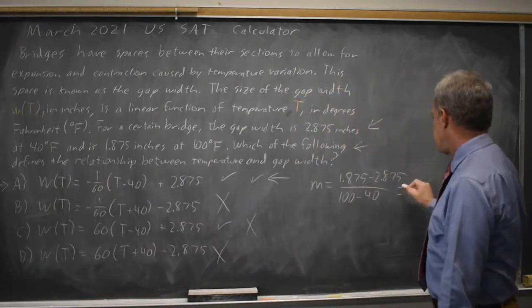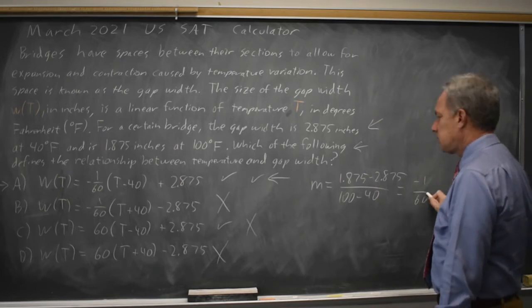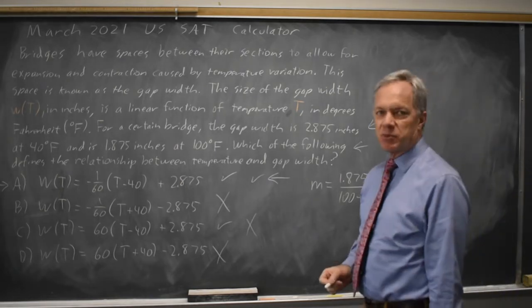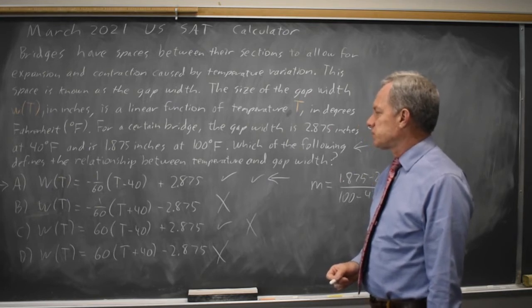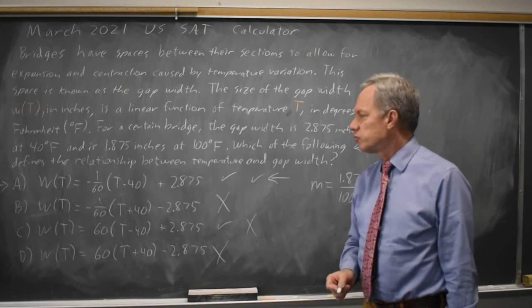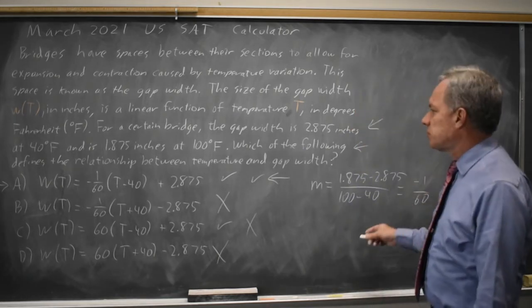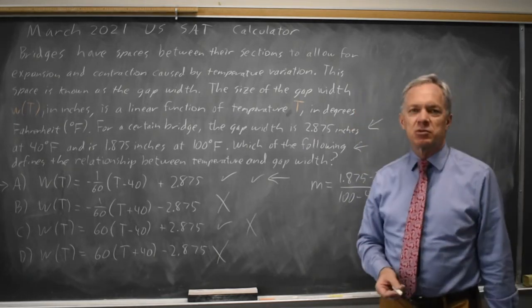So my slope is negative 1 over 60, which matches choices A and B. And then I need to find the intercept, or really this is written in point-slope form, but once I have that slope I can plug in either point and see which one works.